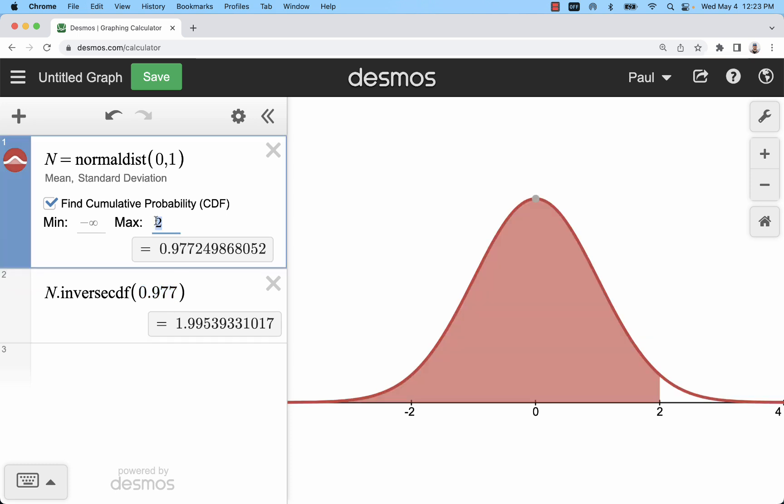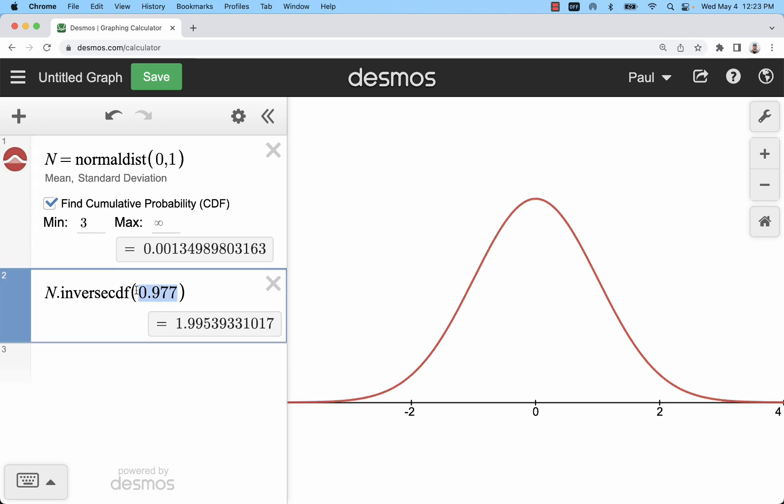It's a little trickier if you have for example a right side area. The area to the right of three is point zero zero one three. I would have to do one minus point zero zero one three when I input that to be able to